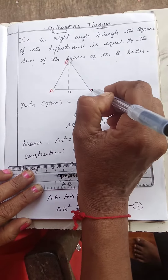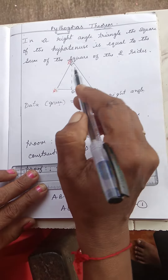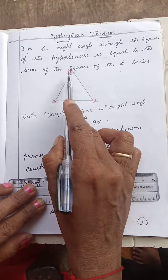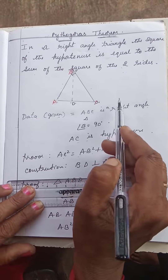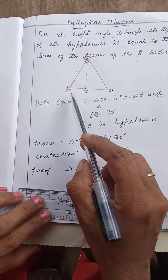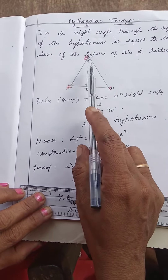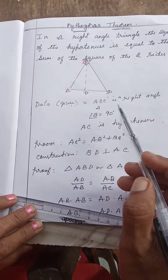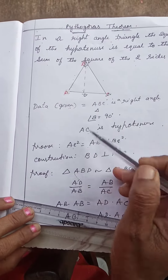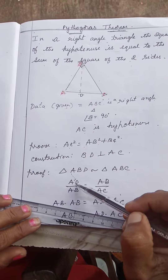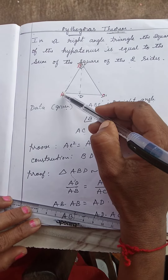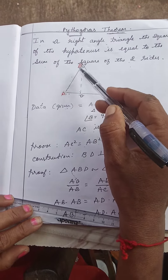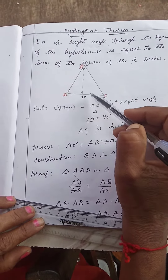BD is perpendicular to AC. Now we are getting two triangles: ABD and BDC. First we take triangles ABD and ABC. Here, AD/BC is equal to AD/AC, and AD/AB is equal to AB/AC.